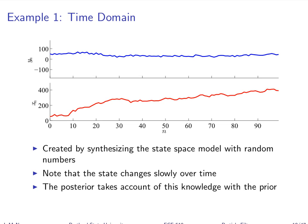That's the true state. It's good engineering practice, once you have your model designed, to create synthetic data and track it to see how well the filter works. Don't immediately go to actual measurement data where you don't know the true state. There are things you can do with measurement data alone, but it's a good idea to have it working with synthetic data first. The state changes slowly over time — only two degrees per sample on average.